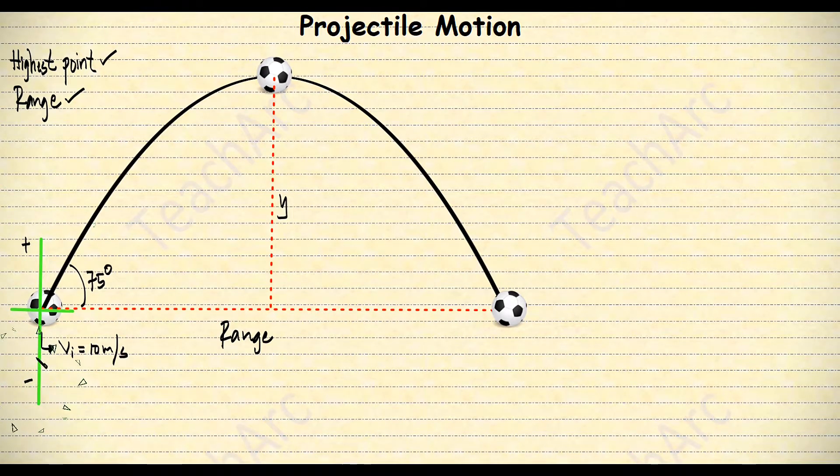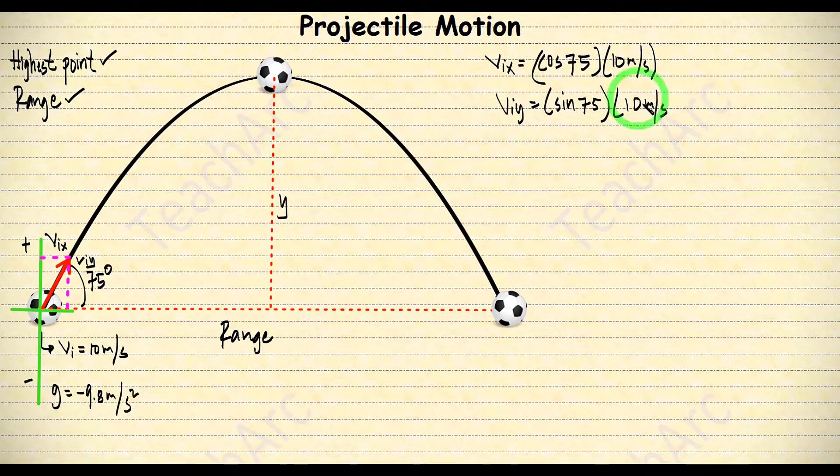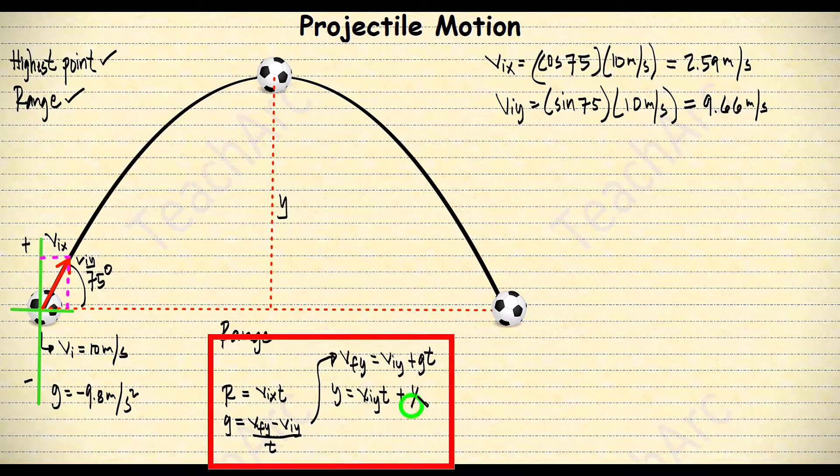The x component of the initial velocity is 2.59 meters per second, and the y component is 9.66 meters per second. Again, these are the formulas that we can use in projectile motion.